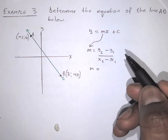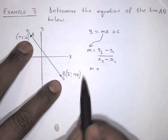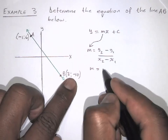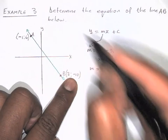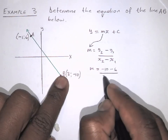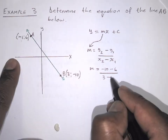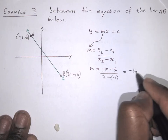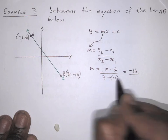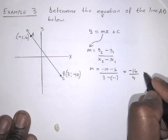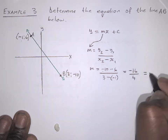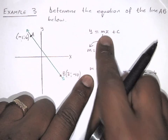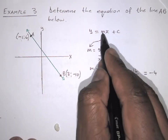Remember from previous lessons, to find the m value we say y2 minus y1 divided by x2 minus x1. So m equals: we have two points. y2 will be minus 10, then subtract y1 which is 6, over x2 which is 3, then subtract x1 which is minus 1. So the m value becomes minus 16 divided by 4, which is minus 4. Now I know that the gradient m is minus 4. If m is minus 4, I can plug it in as previously. Therefore, y is equal to minus 4x plus c.